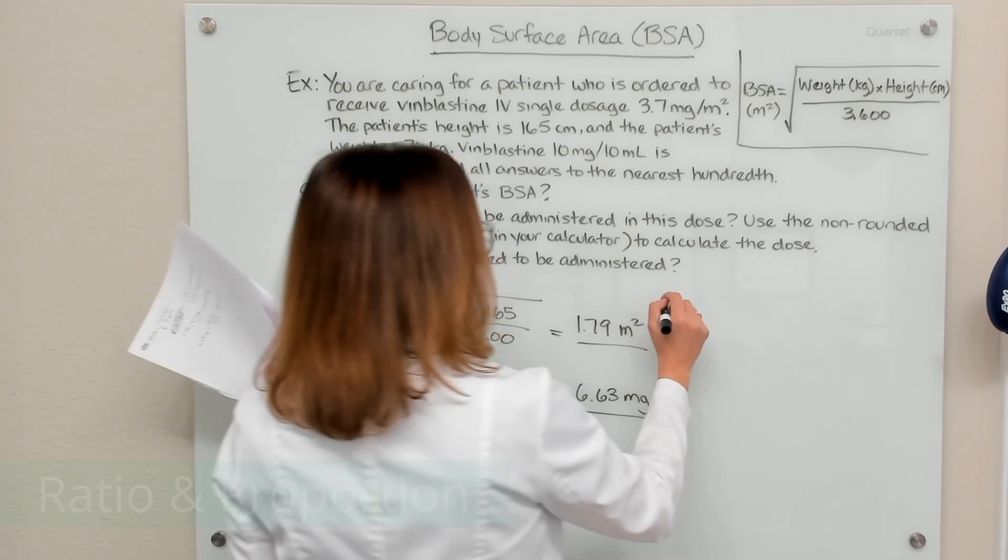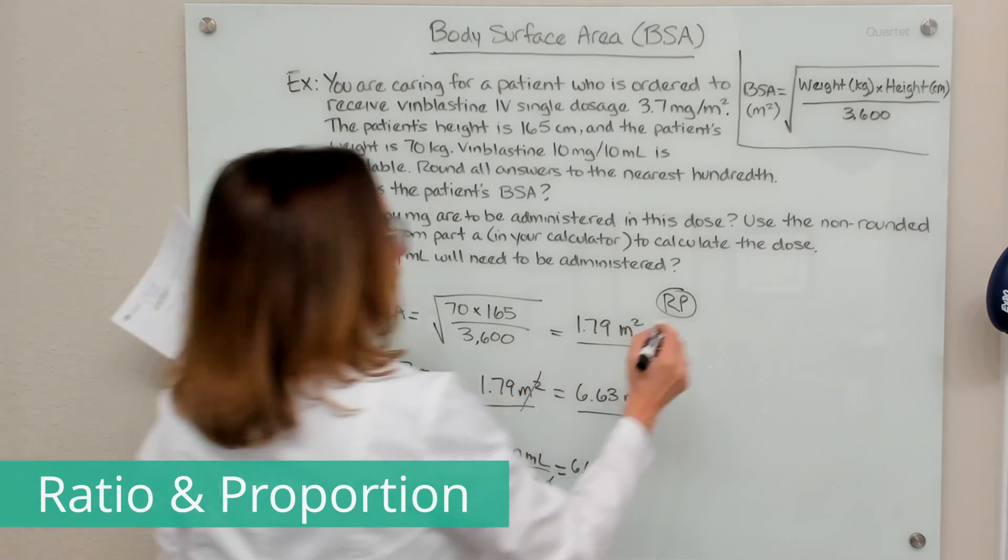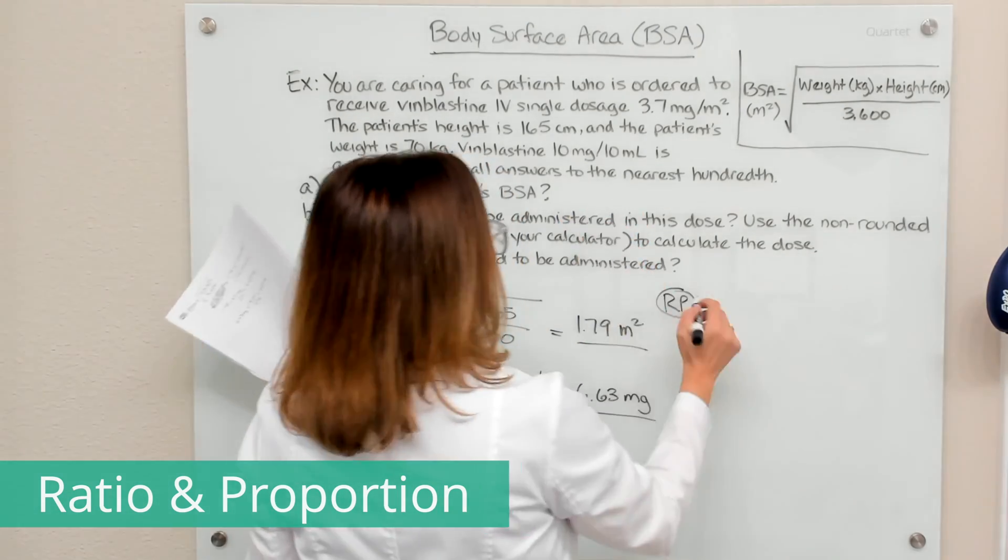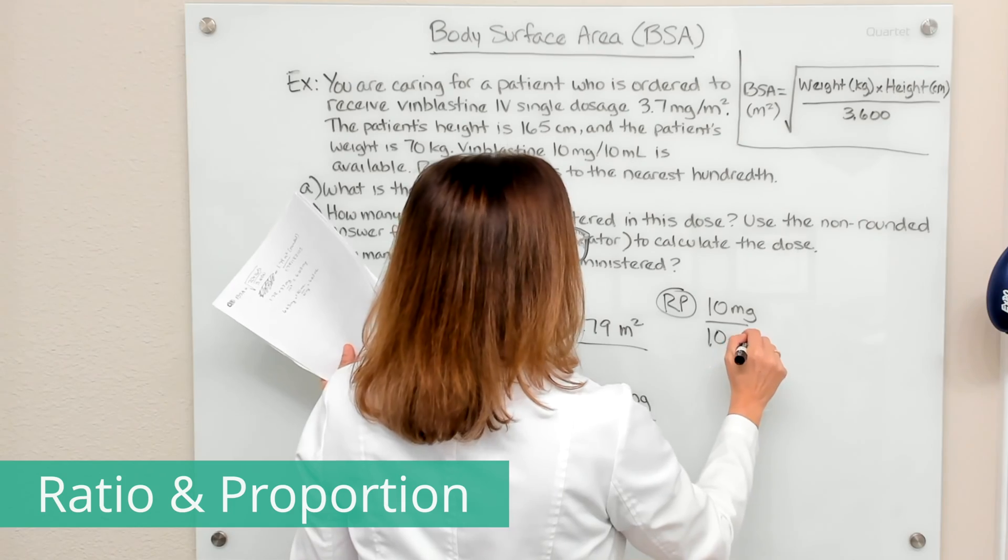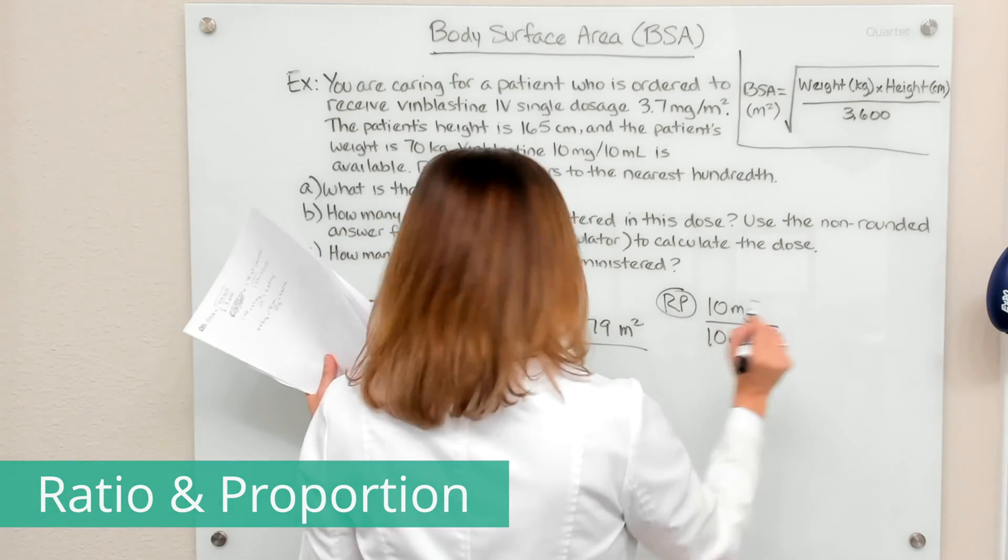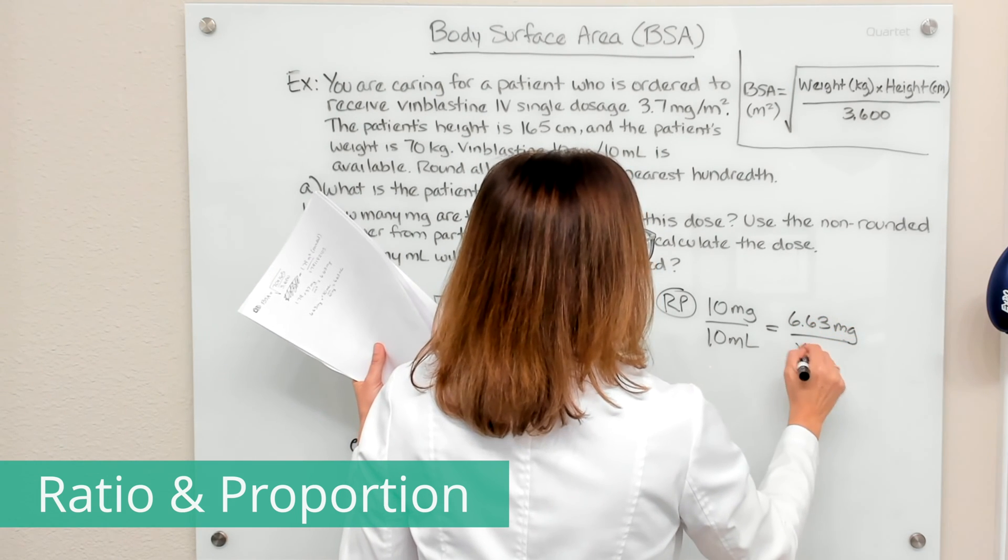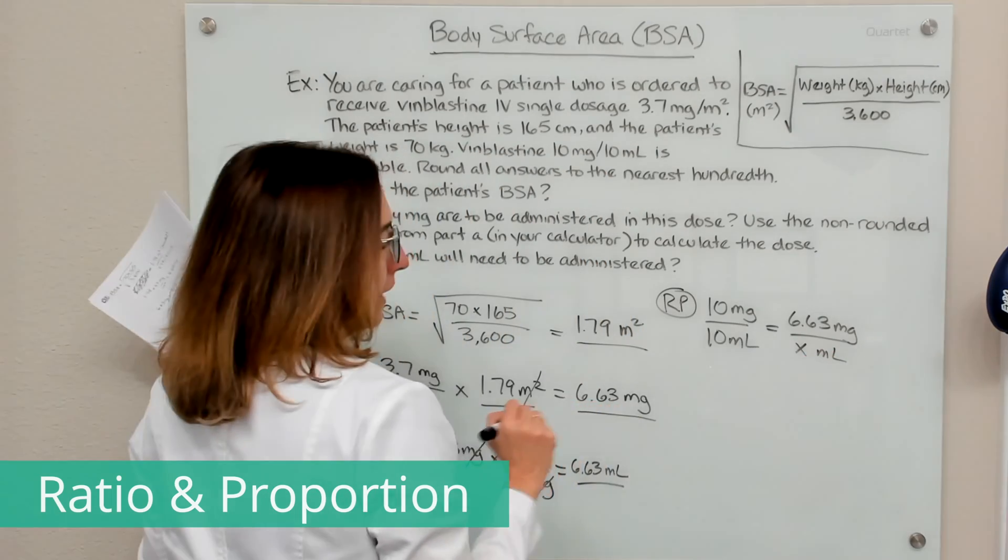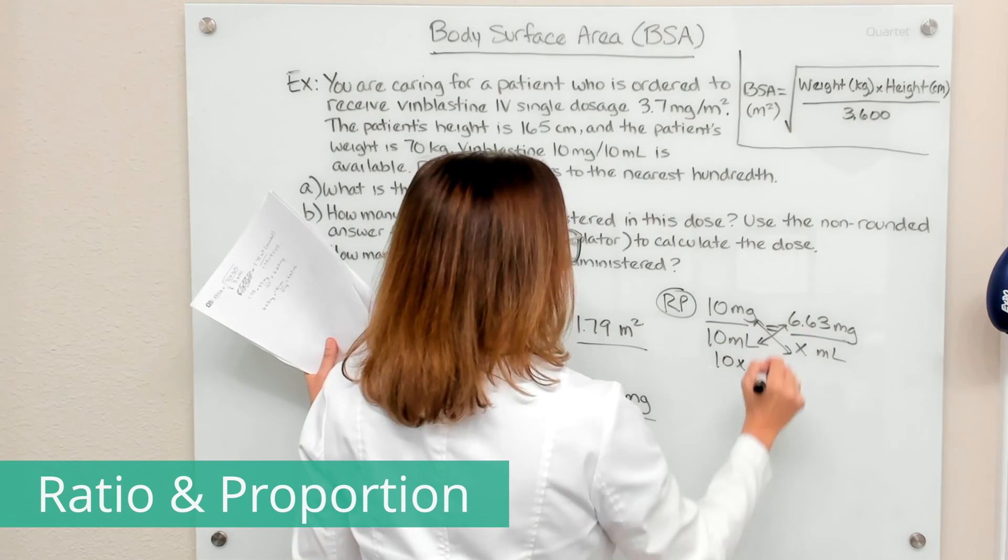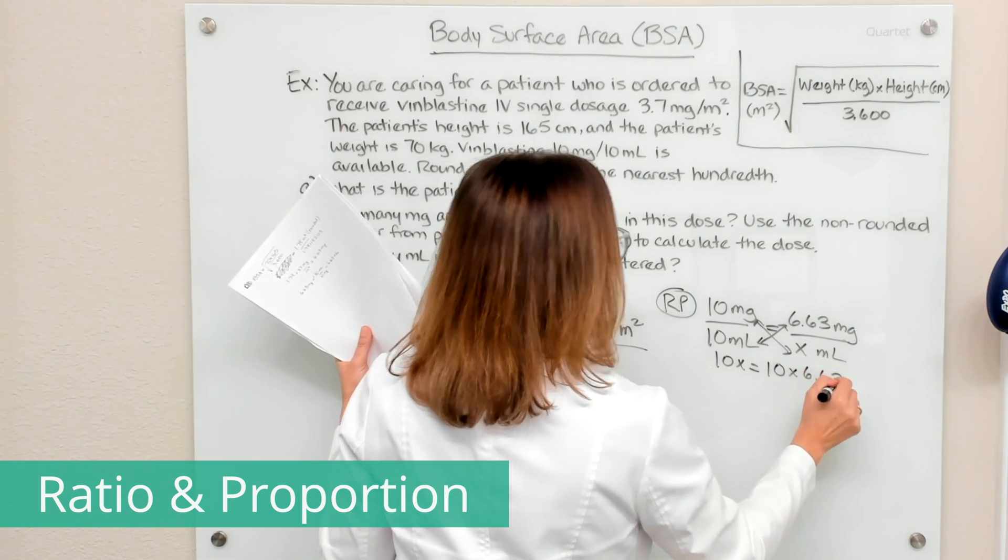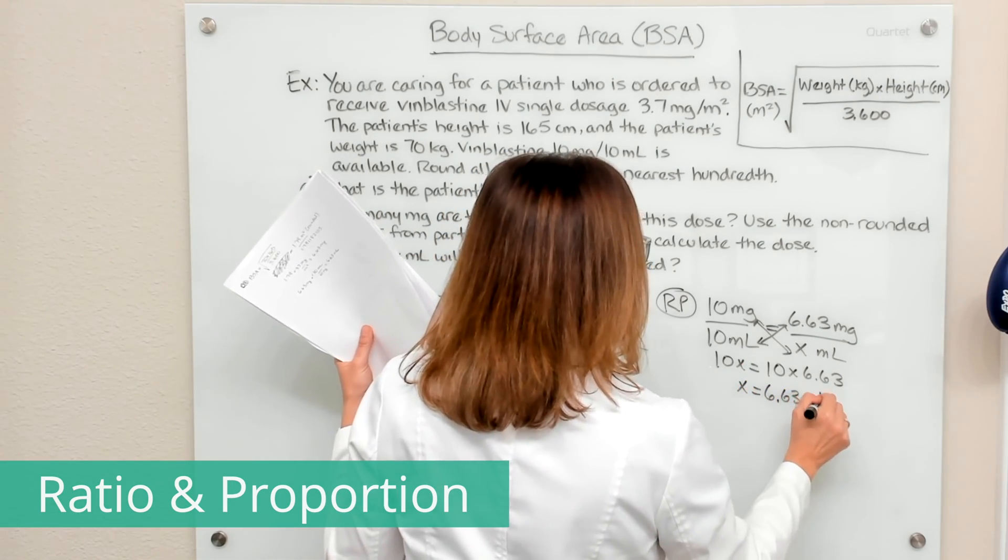I could also solve this part of the problem with ratio and proportion as well. If you like that method, you would first start off by writing down your known ratio, which is our concentration. So 10 milligrams in 10 ml. And then on the other side of the equation, we would write down our desired dose and an x for ml. And then we would cross multiply here. So 10x equals 10 times 6.63. If you solve for x, you will end up with 6.63 milliliters.